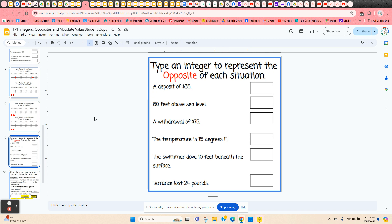Now this one's a little tricky, so you want to make sure students understand the instructions. They're given a real life situation, and they have to type an integer that represents the opposite of that situation. So a deposit of $35, since that's positive, the opposite would be negative 35. So it makes them think a little bit about each one of these, and what an opposite means.